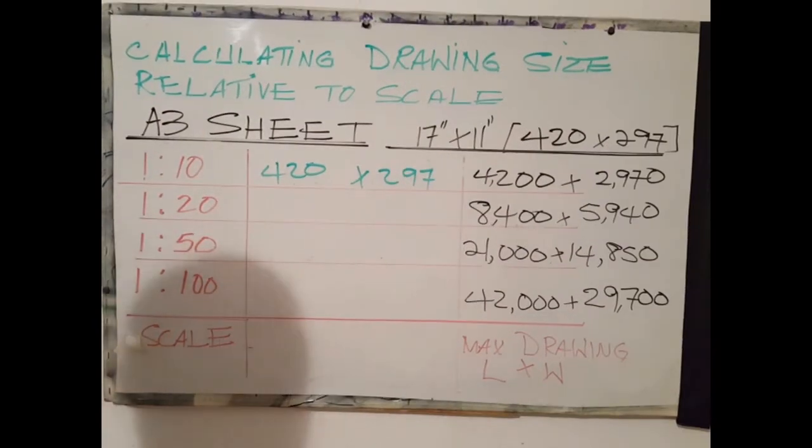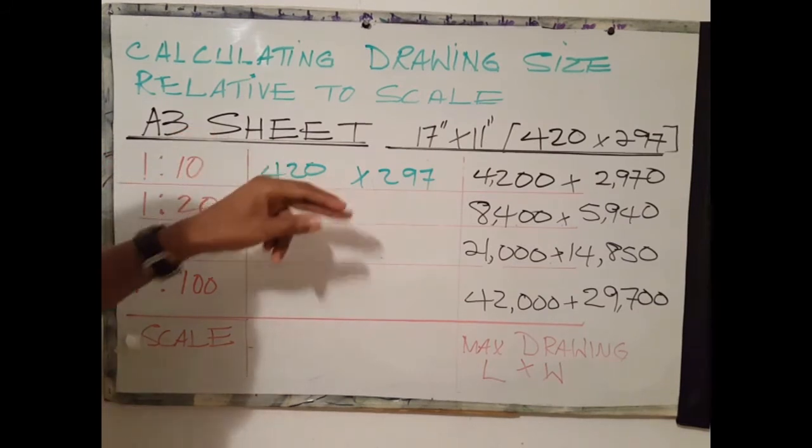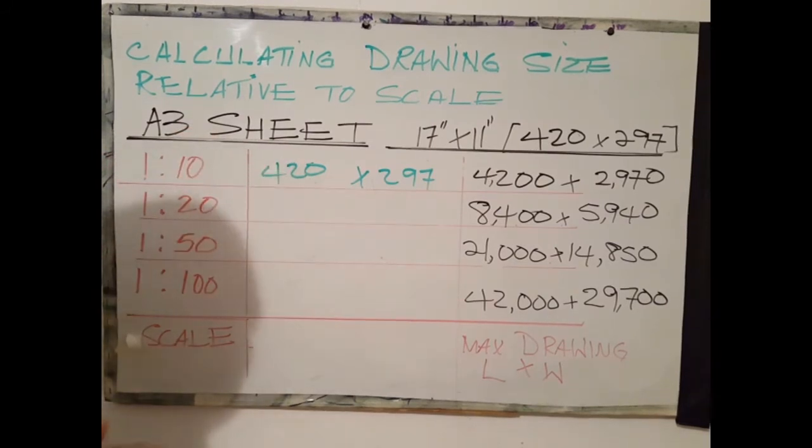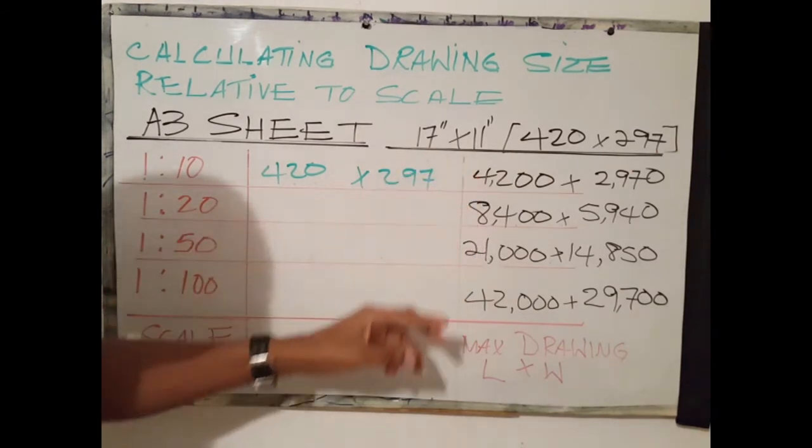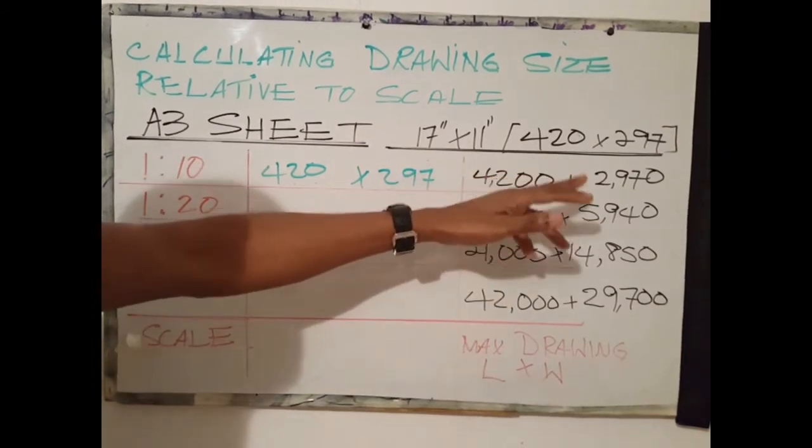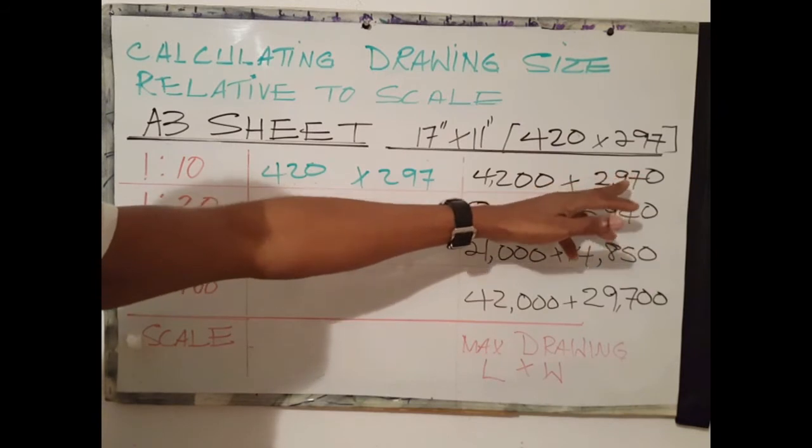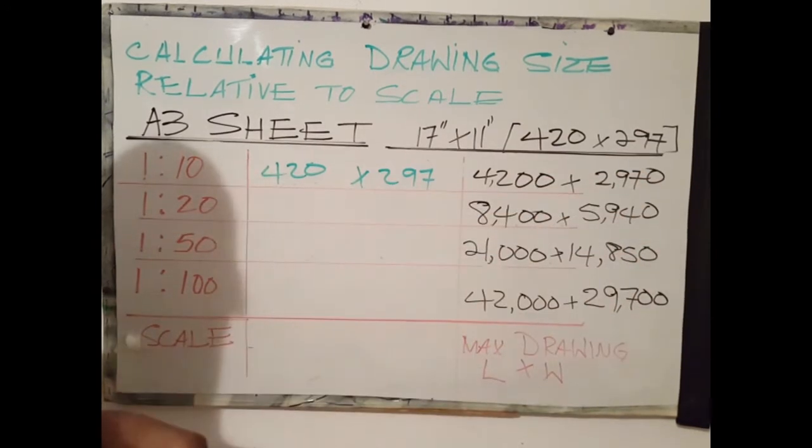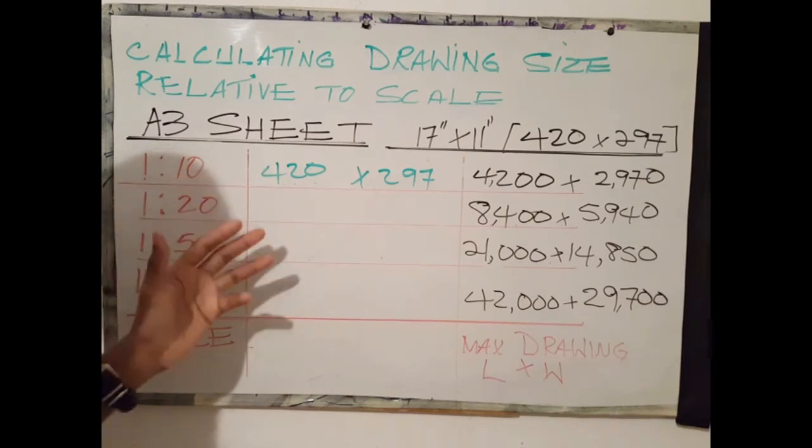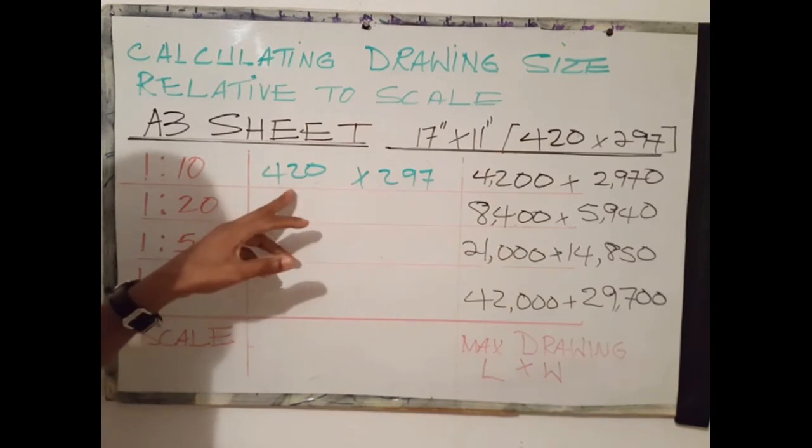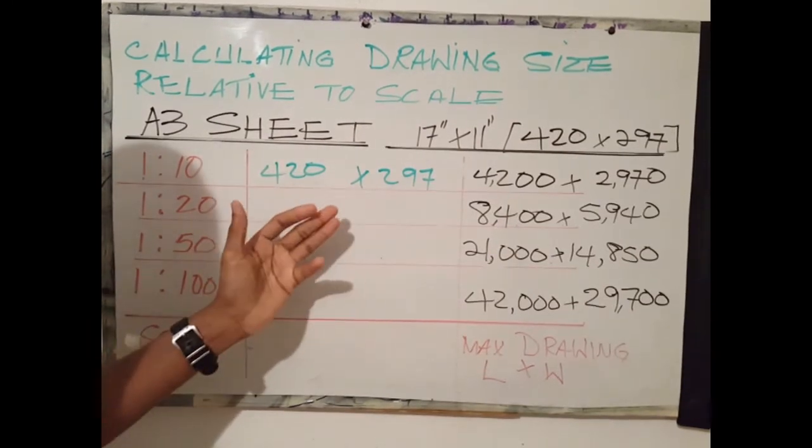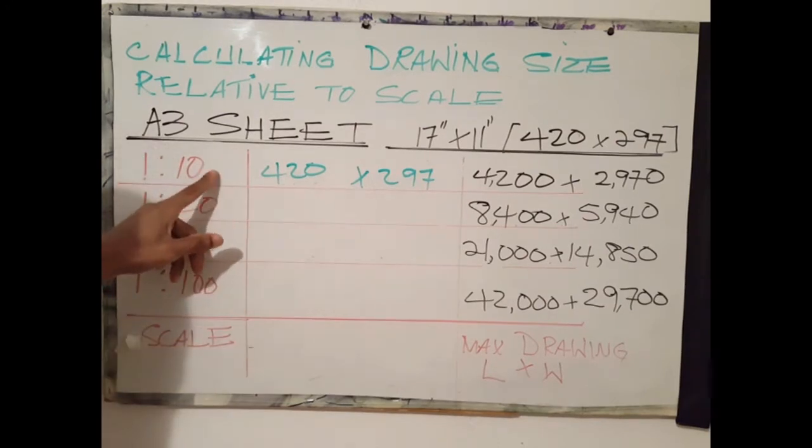Here we have a breakdown of an A3 sheet of paper. An A3 sheet of paper is 17 inches by 11 inches or 420 millimeters by 297 millimeters. To calculate the maximum size drawing that can fit onto A3 paper, given the dimensions with a scale of 1 to 10.